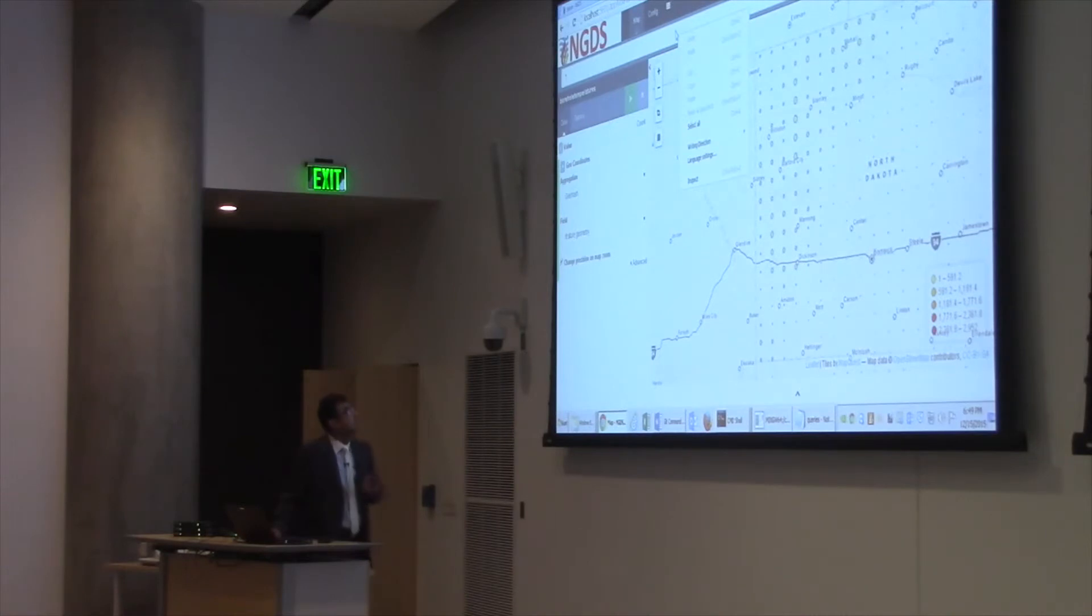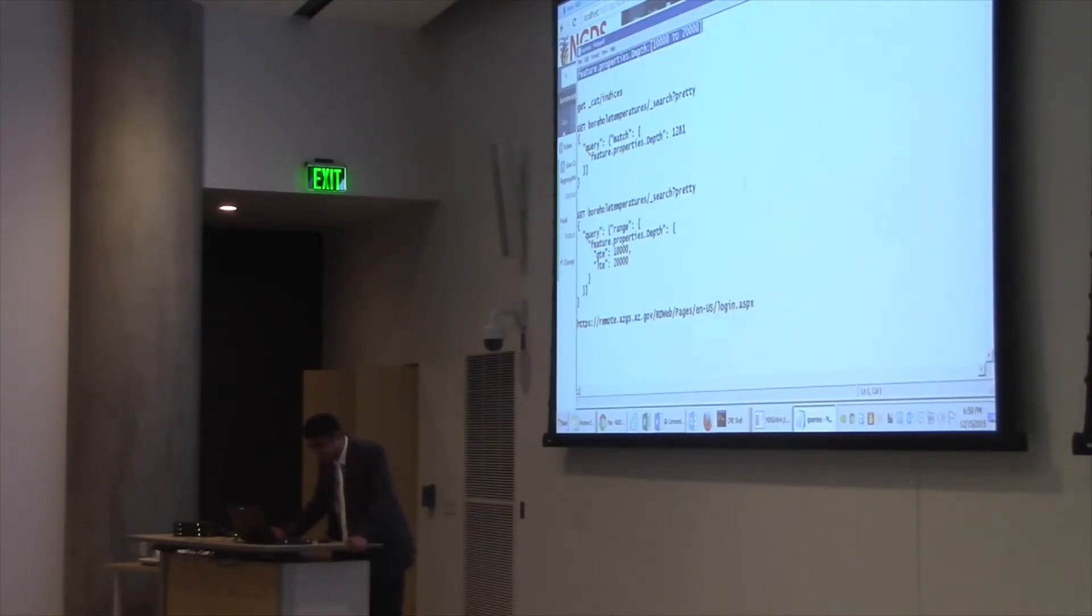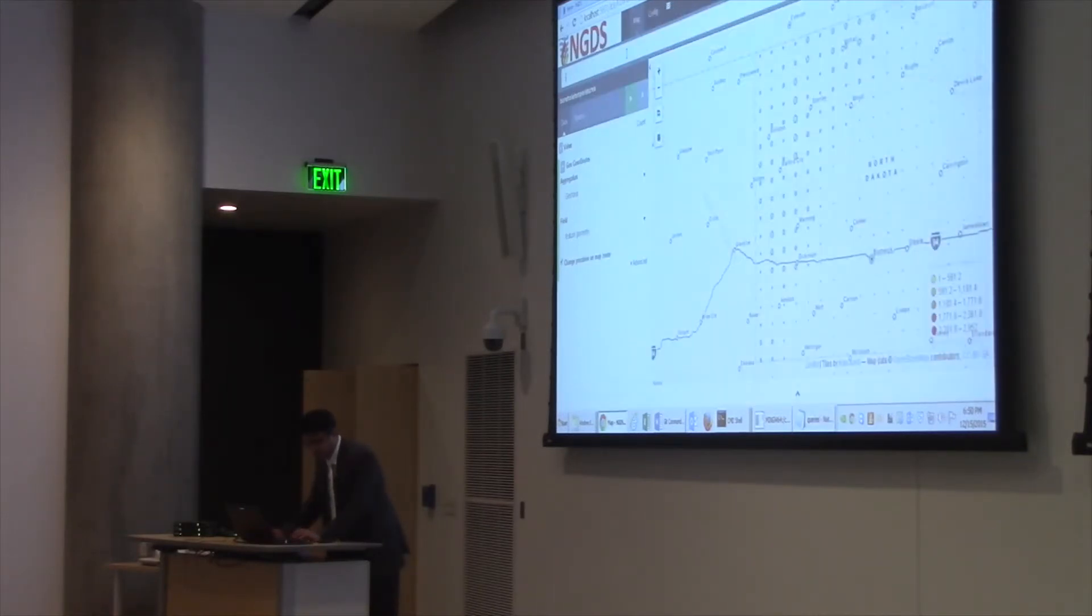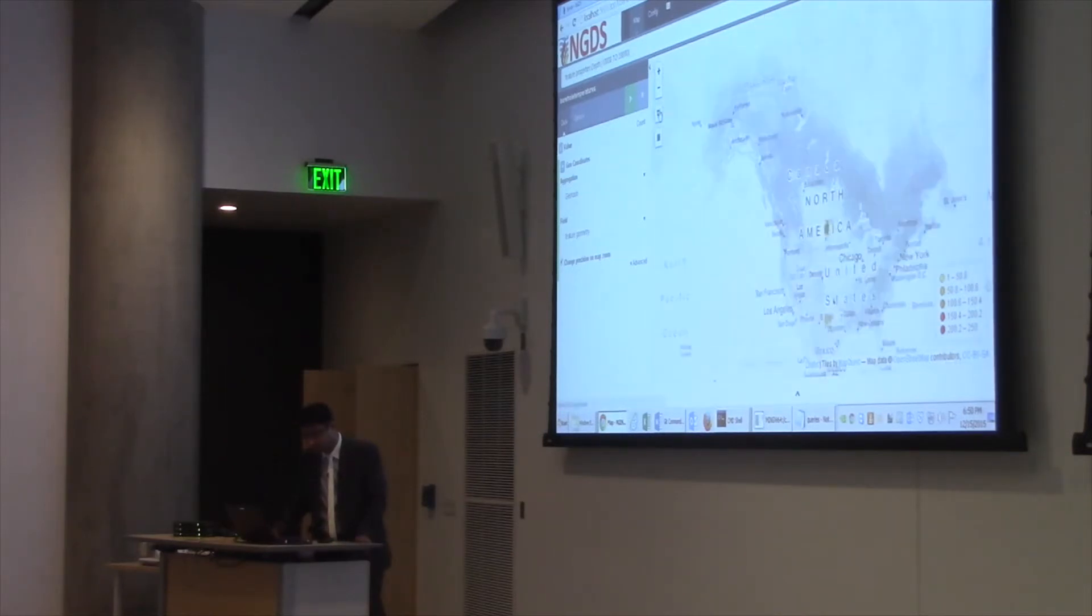You can also query within the document or you can query with the numeric operations as well. For example, I query the map to give me the borehole temperatures where depth ranges between 10,000 to 20,000. And when you look at the statistics, there are 753 features available on the map that satisfy this condition.